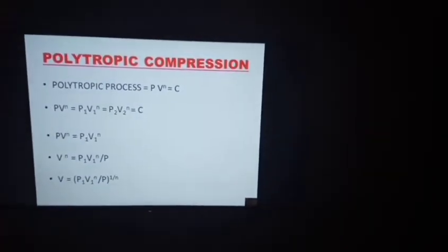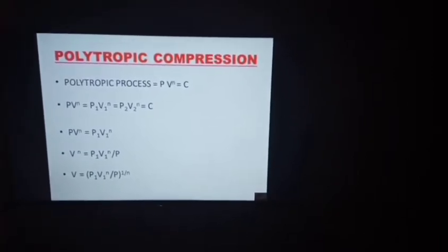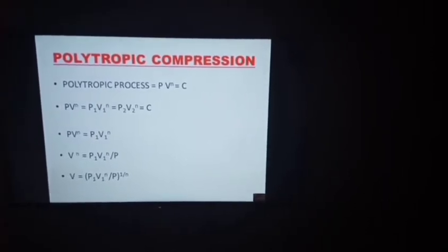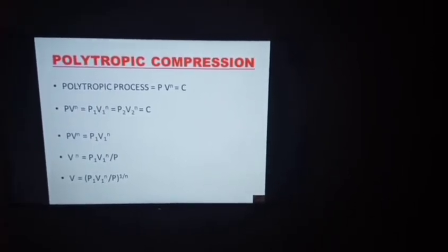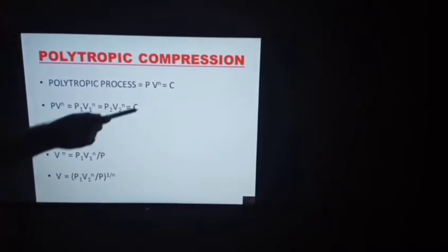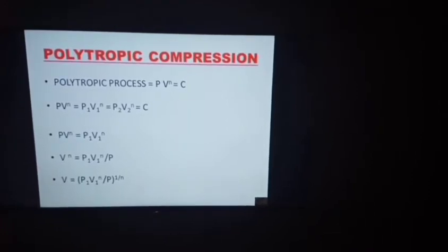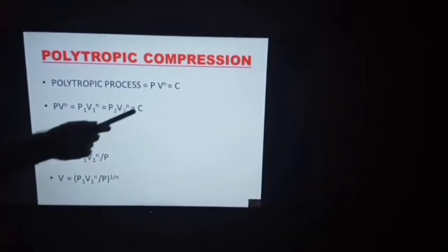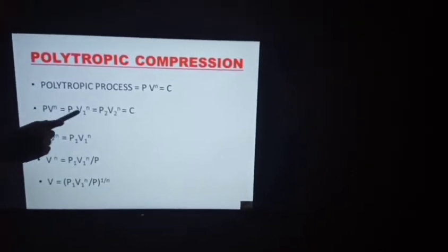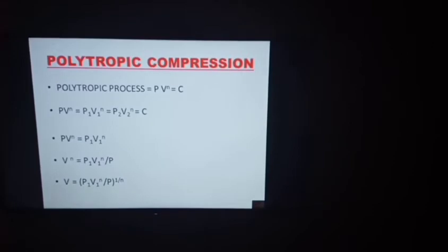We are going to derive the equation for polytropic compression. We know the polytropic process is defined by the relationship: pressure and volume are related by the equation PV raised to N equals a constant, where N represents the polytropic index. Since PV^N equals a constant, we can write P1V1^N equals P2V2^N equals a constant.